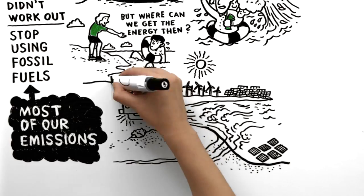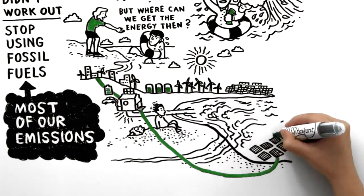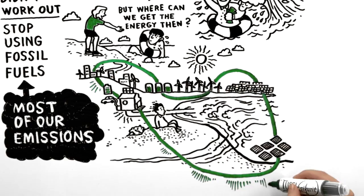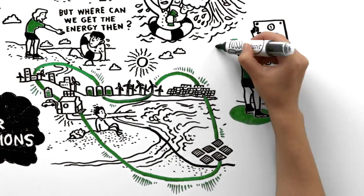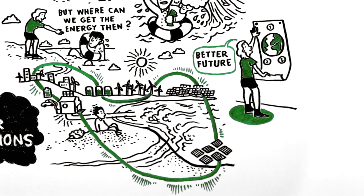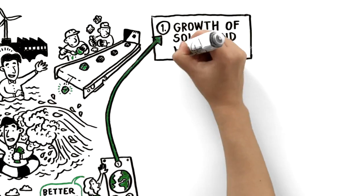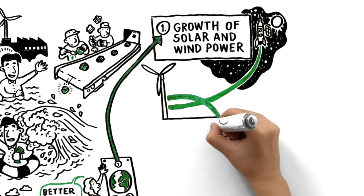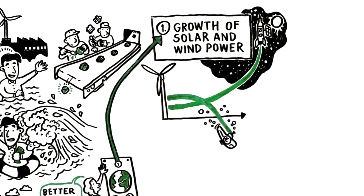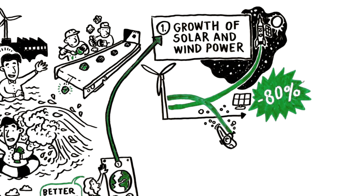By combining different renewable sources with smarter use of energy, we can create a system that frees us from dirty fuels. Here are three ways in which a better future is already unfolding. Growth of solar and wind power is skyrocketing, while prices are sinking fast. For example, the price of solar panels has dropped 80% in just five years.